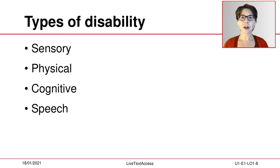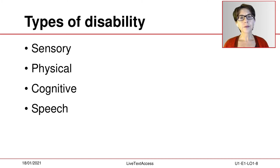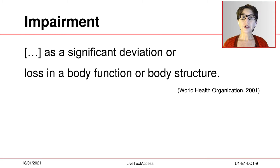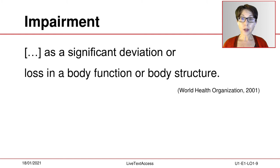Indeed, we could say that this is not entirely correct, because it is not the impairment itself that causes the state of disability. In other words, the impairment is just one part of the equation. The International Classification of Functioning, Disability and Health defines impairment as a significant deviation or loss in a body function or body structure.